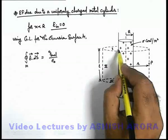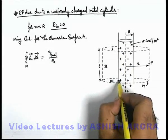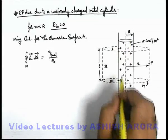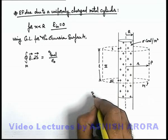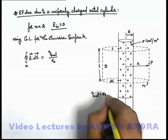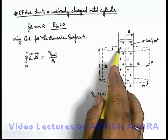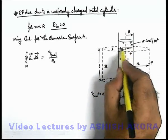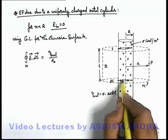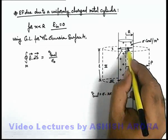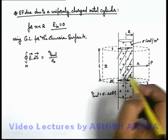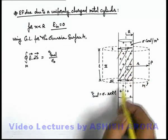In this situation, a total length l of the cylinder is enclosed in it which is of radius R. So the enclosed charge can be written as sigma multiplied by 2πRl, as the total area of this cylinder which is enclosed within this Gaussian surface.